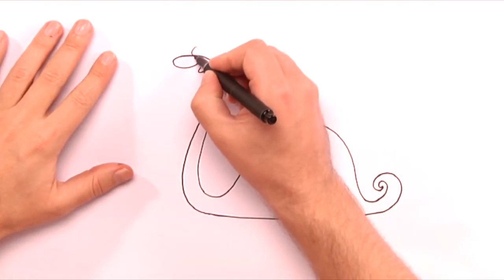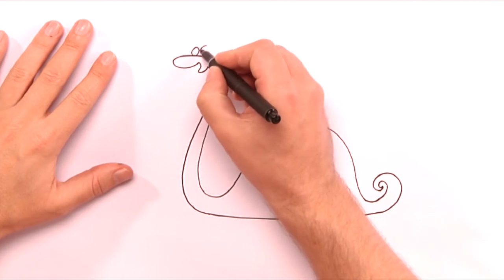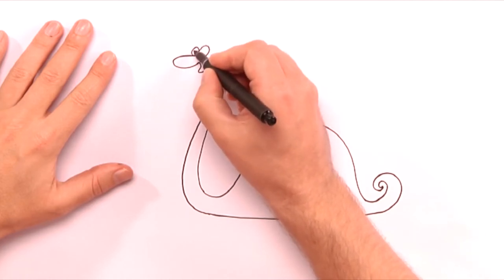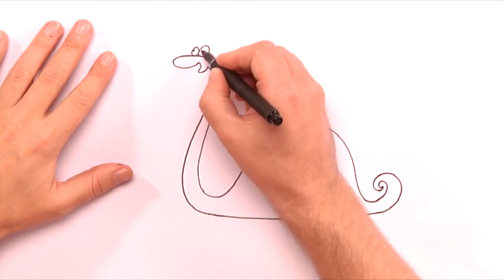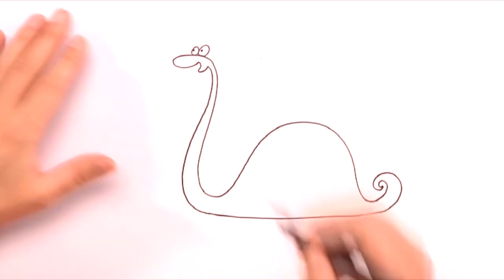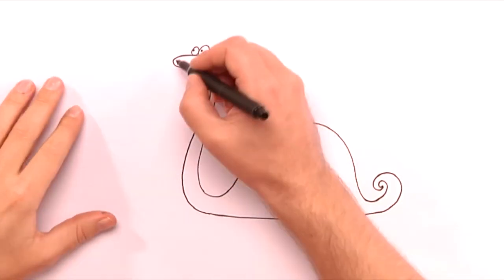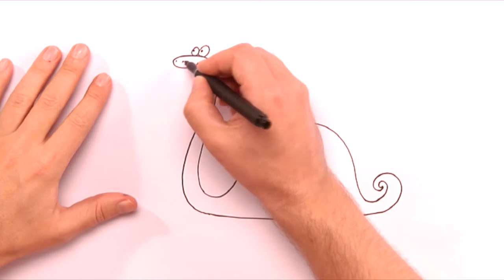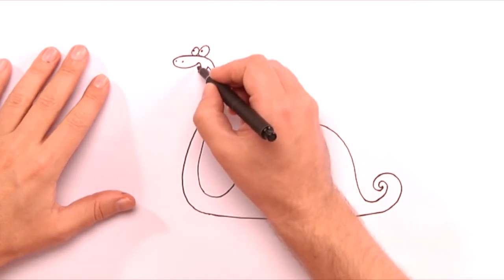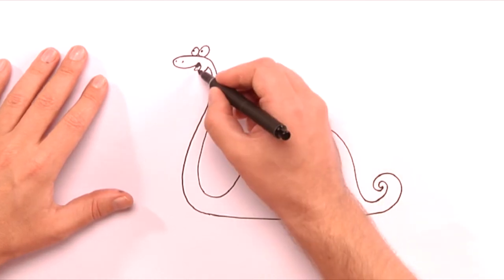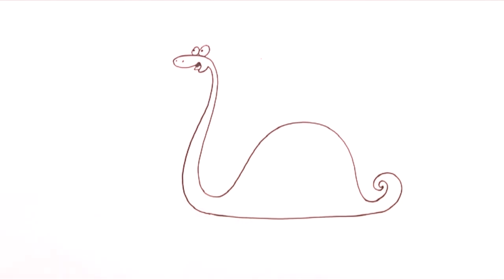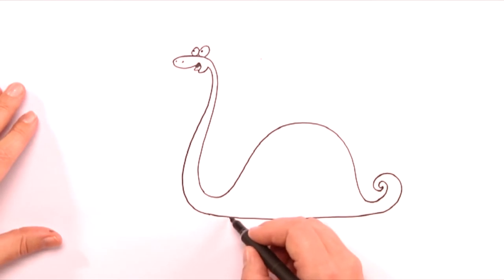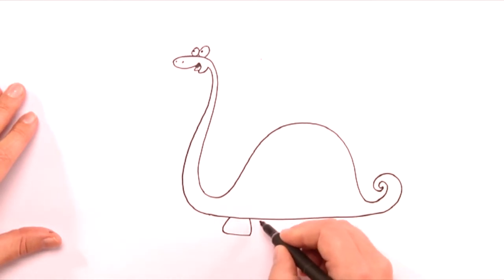finish up the face. First eyes, then nostrils, then tongue. After that, we add the short powerful legs and the nails.